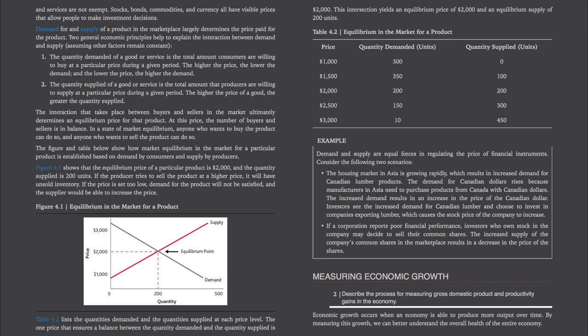The housing market in Asia is growing rapidly, which results in increased demand for Canadian lumber products. The demand for Canadian dollars rises because manufacturers in Asia need to purchase products from Canada with Canadian dollars. The increased demand results in an increase in the price of the Canadian dollar. Investors see the increased demand for Canadian lumber and choose to invest in companies exporting lumber, which causes the stock price of the company to increase. If a corporation reports poor financial performance, investors who own stock in the company may decide to sell their common shares. The increased supply of the company's common shares in the marketplace results in a decrease in the price of the shares.